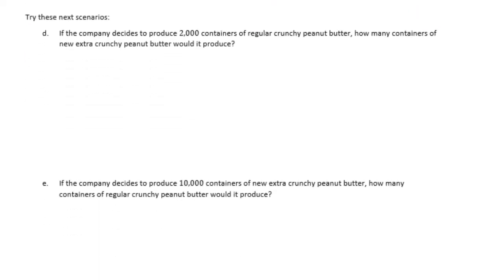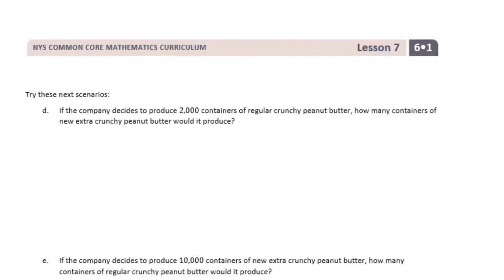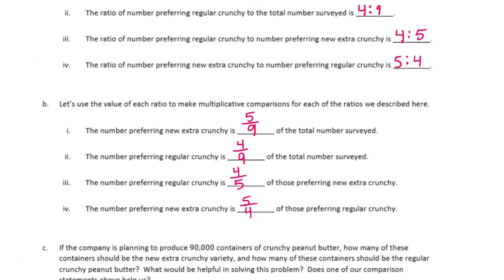Part D: if the company decides to produce 2,000 containers of regular crunchy peanut butter, how many containers of new extra crunchy would it produce? Instead of tape diagrams, we'll use equivalent fractions, since ratios are also equivalent fractions. The ratio of regular crunchy to extra crunchy is four to five, so we set up four-fifths equal to 2,000 over the unknown.